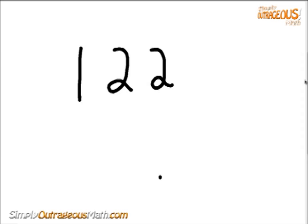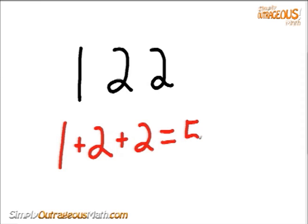So if we look at the number 122, that is made up of a 1, a 2, and another 2. And of course we'll add those together. 1 plus 2 plus 2 equals 5.